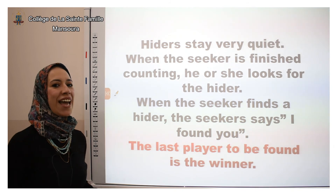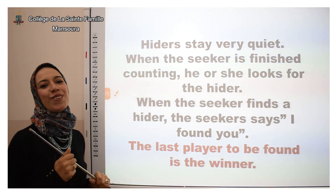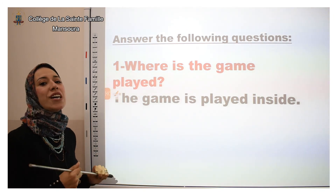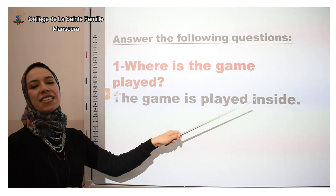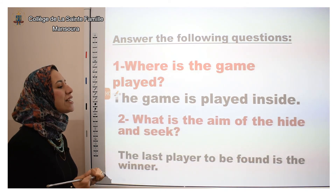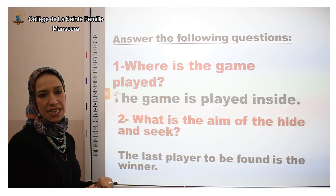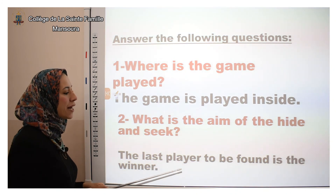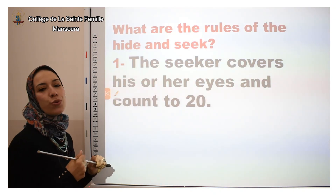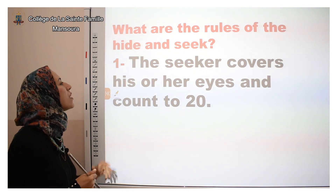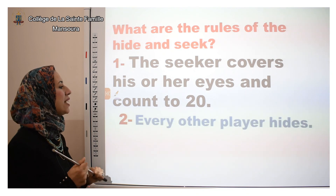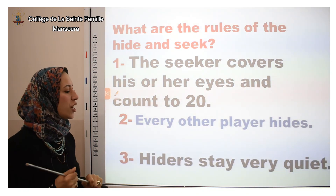Did you understand this article? Do you know now how to play hide and seek? Let's answer the following questions. First: where is the game played? Hide and seek is played inside. Second: what is the aim or goal of hide and seek? The last player to be found is the winner. The rules are: the seeker covers his or her eyes and counts to 20, every other player hides, and hiders stay very quiet.